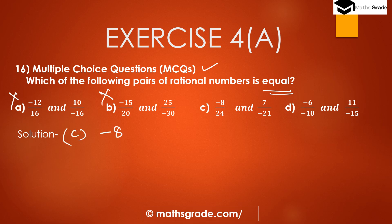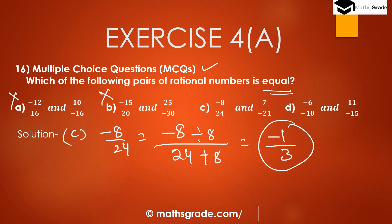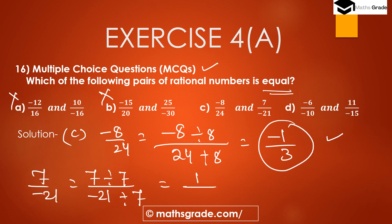Option C: -8/24 and 7/(-21). For -8/24, HCF of 8 and 24 is 8, so -8 ÷ 8 = -1 and 24 ÷ 8 = 3, giving -1/3. For 7/(-21), HCF of 7 and 21 is 7, so 7 ÷ 7 = 1 and -21 ÷ 7 = -3, giving 1/(-3) = -1/3. Both simplify to -1/3, so they are equal.